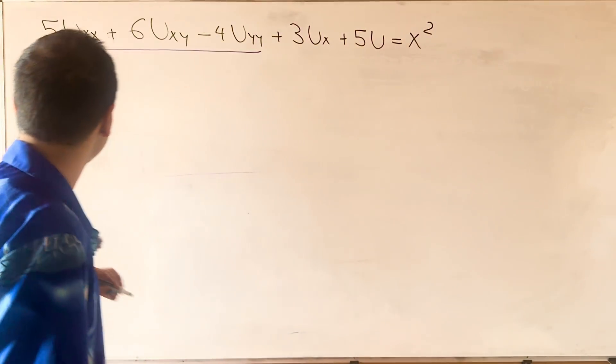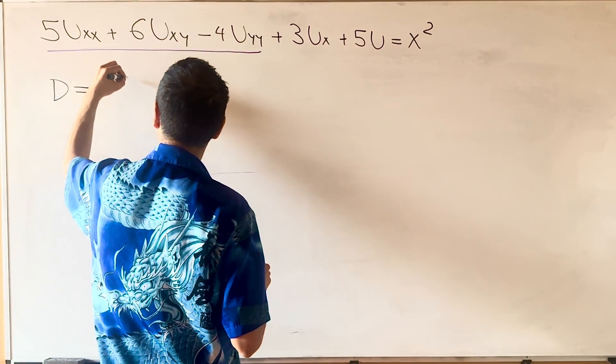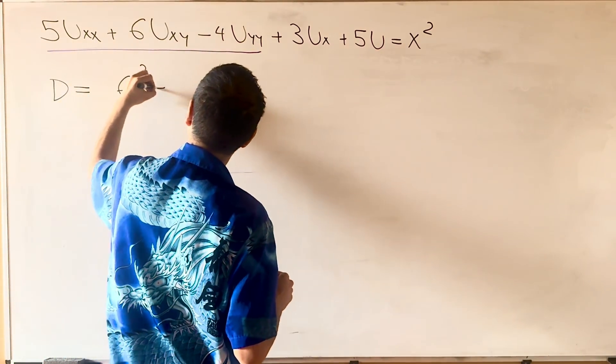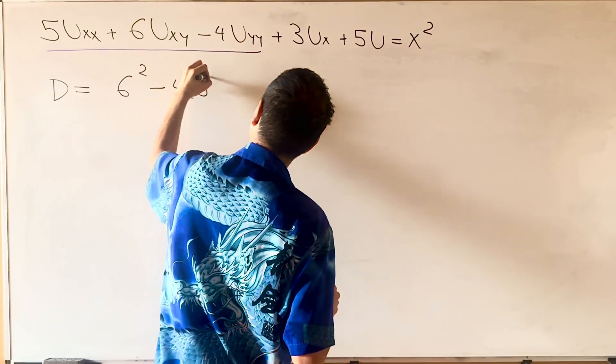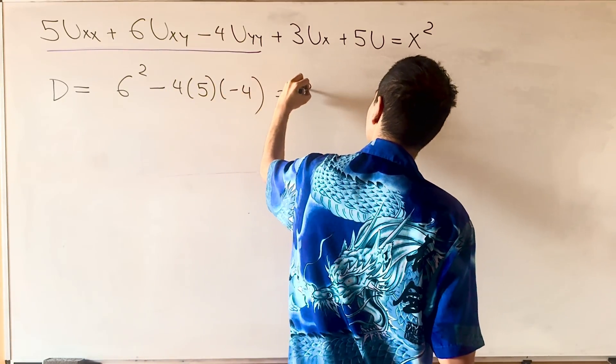In this case, D equals B² minus 4AC. So, 6² minus 4 times 5 times minus 4, which becomes 36.